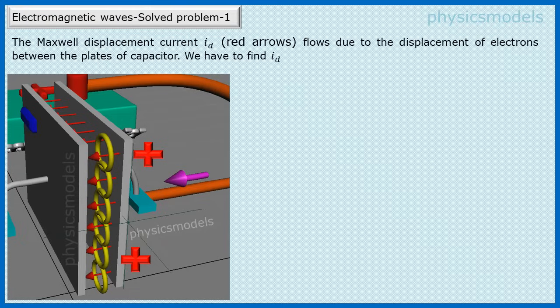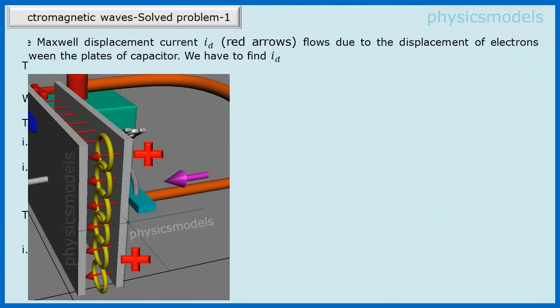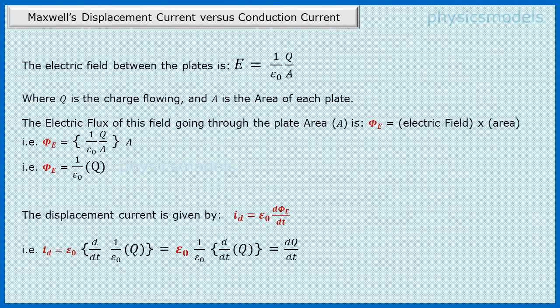As a result of this, now let's look at the equation. The electric field between the capacitor plates is given by E equals 1 over epsilon naught times Q over A, where Q is the charge flowing and A is the area of the plate.